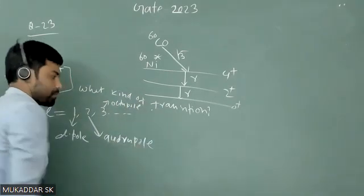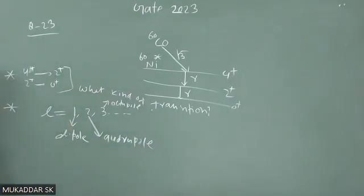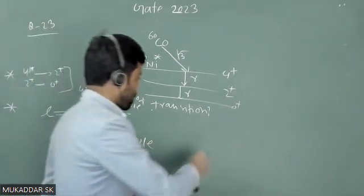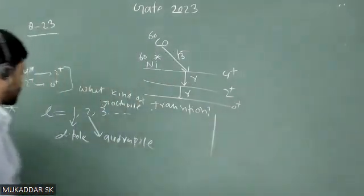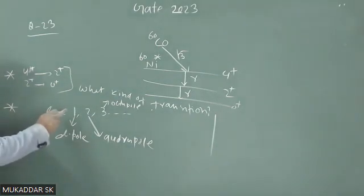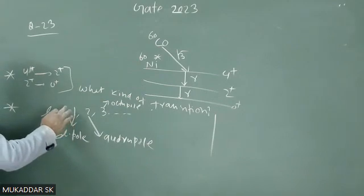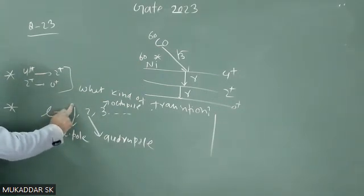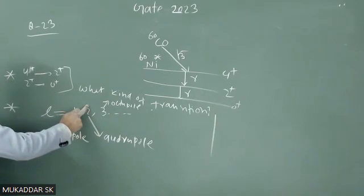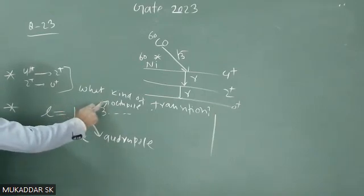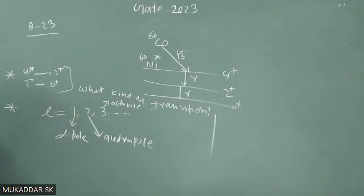So first we have to calculate L values. I should mention that E1 means electric dipole, E2 means electric quadrupole, E3 means electric octopole, and same is true for magnetic: M1 means magnetic dipole, M2 magnetic quadrupole, M3 magnetic octopole, and so on.